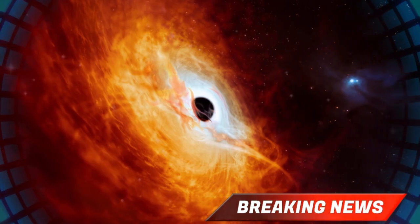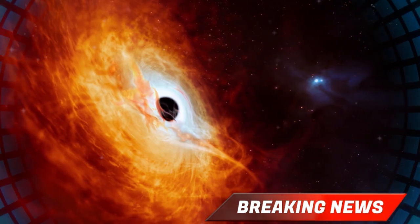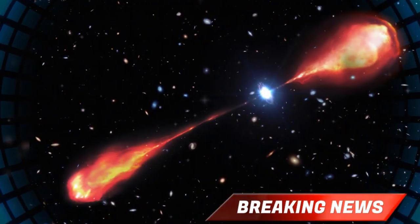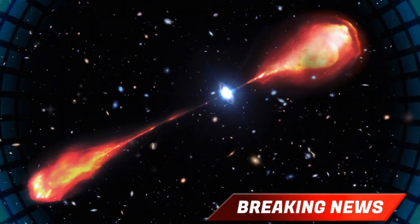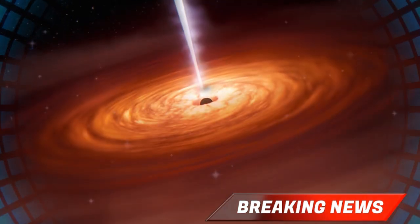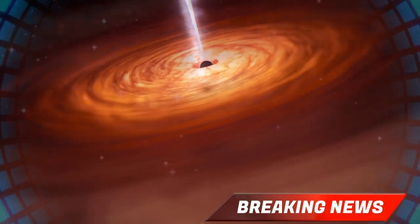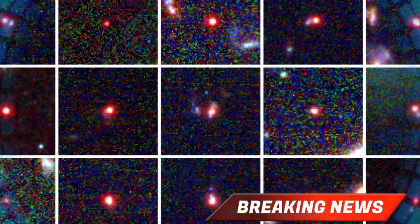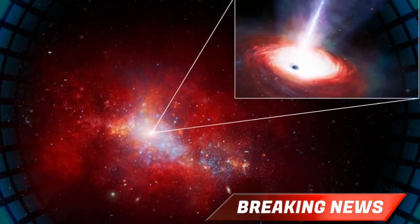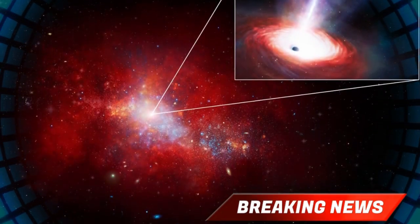Black holes grow in two main ways: by swallowing up matter like gas, dust and stars, and by merging with other black holes. But there's a natural speed limit, known as the Eddington limit. This limit is based on the balance between two opposing forces: the radiation blasting outward from material as it falls toward the black hole, and the gravitational pull sucking that same material inward.